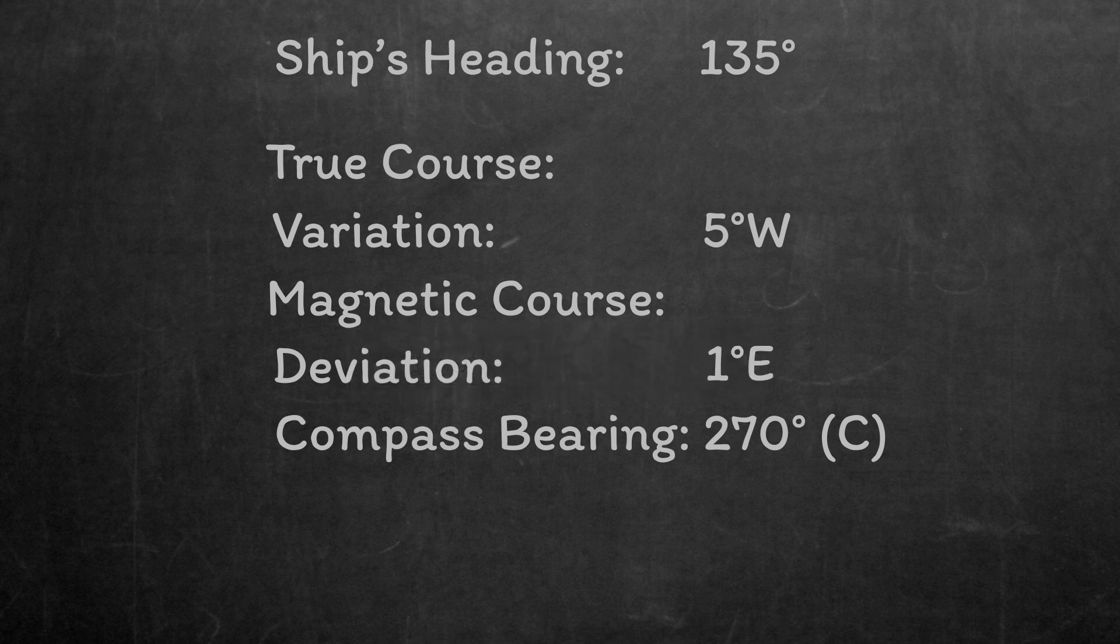Now we can work through the table as before with either the diagram or the rhymes. As deviation is east, we add it to the compass bearing to get the magnetic bearing as 271 degrees magnetic. We can use the rhyme to check we're correct, deviation east, compass least. And finally, as variation is west, we need to subtract it from the magnetic bearing to get the true bearing. 271 minus 5, so you get 266 degrees true.